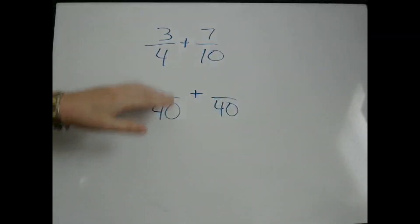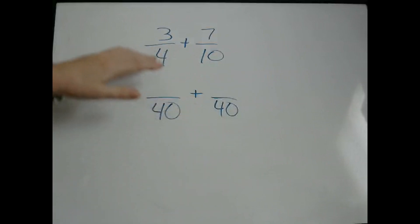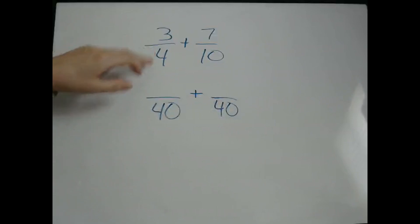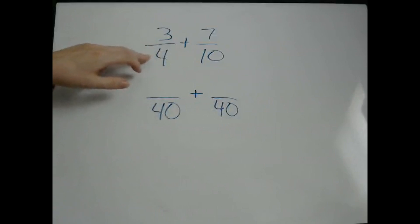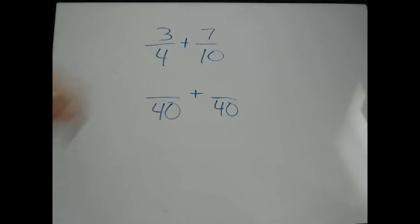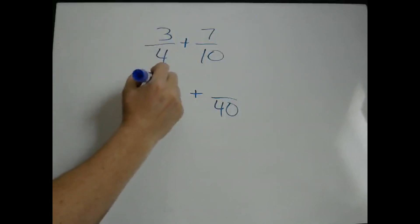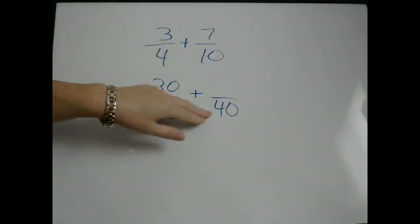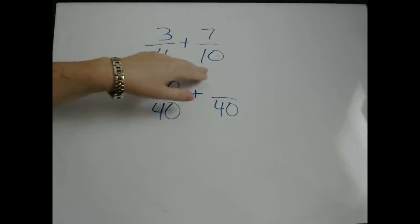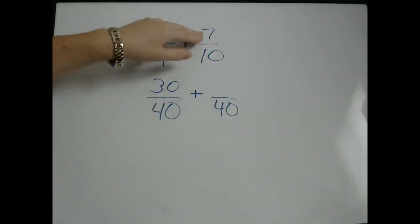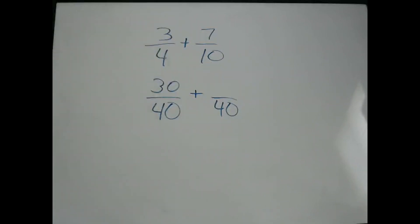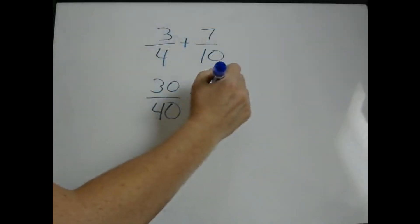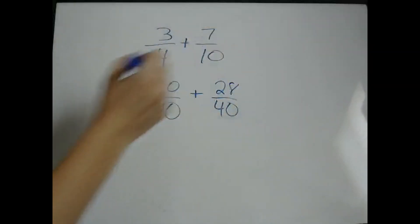Now 40 is going to be the denominator for each of your fractions. You're going to transform these into two new fractions. How did we get from 4 to 40? We multiplied it by 10. So if we're going to multiply the denominator by 10, we have to multiply the numerator by 10 in order for this fraction to stay the same — so 3 times 10 is 30. How did we get from 10 to 40? We multiplied it by 4. So we have to multiply the numerator by 4 as well — so 7 times 4 is 28.